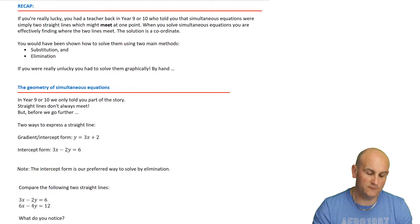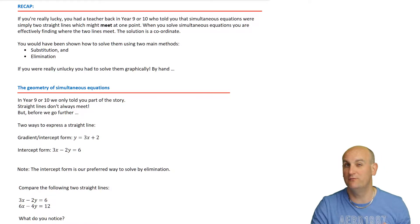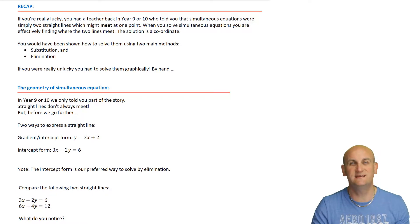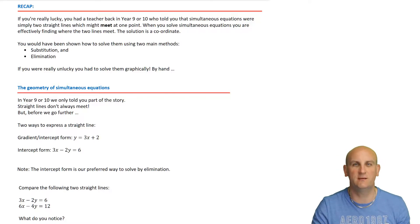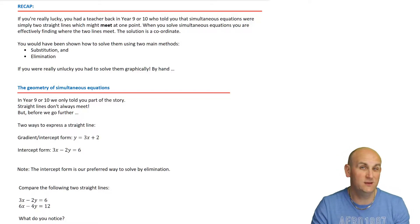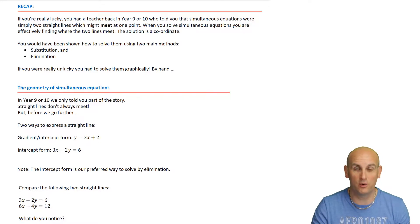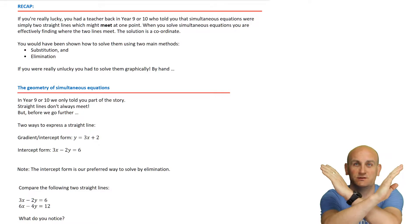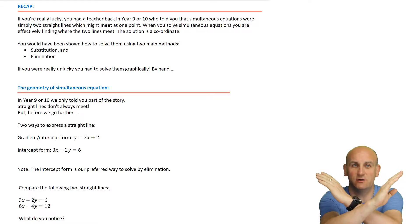If you remember anything about year 9 and 10, when you solve simultaneous equations you always get a value that x equals and y equals, and you would go on and check. But if you didn't understand why you were doing that, it made life a lot more complicated. The good news is that simultaneous equations are nothing more than straight lines which cross.